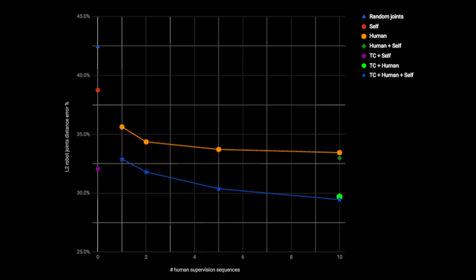We compare different combinations of training signals and show that TCN plus robot self-supervision outperforms pure human supervision. We find that combining all signals performs best.